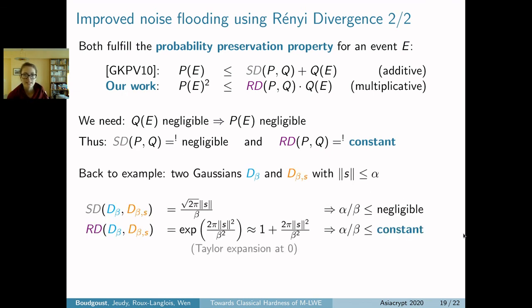We can see this in our concrete example. If we have two Gaussians 𝒟_β and 𝒟_β shifted by S, and assume the norm of S is bounded by α, for statistical distance we need α/β, the ratio, to be negligible. But in Rényi divergence, we only need the ratio to be constant by using a Taylor expansion argument at zero. So we can have much better parameters.